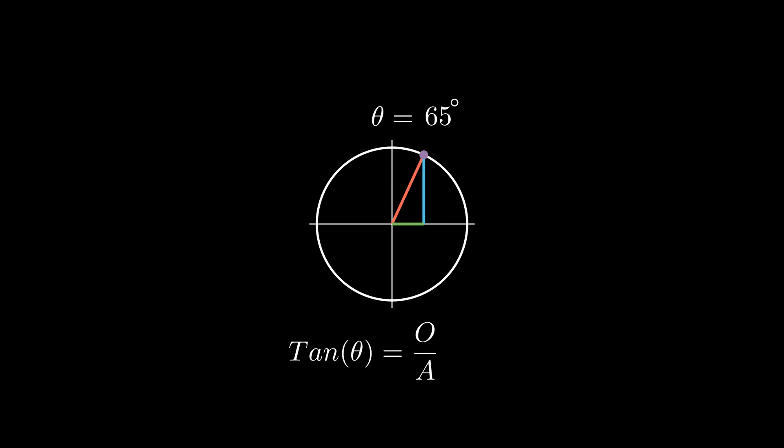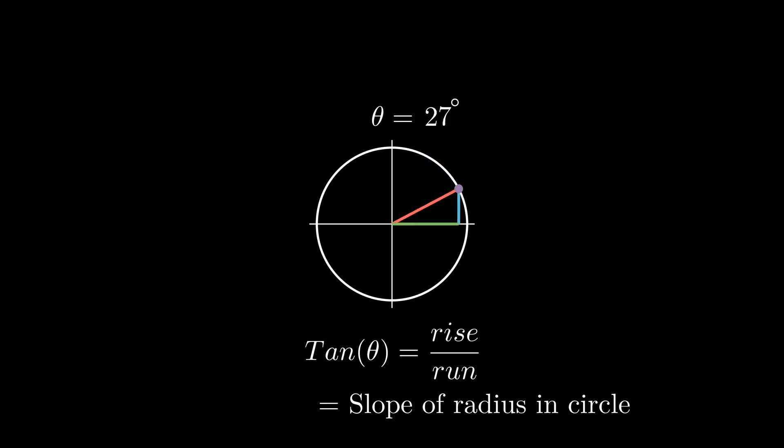Now tan, the mnemonic with TOA, or opposite divided by adjacent, can be expressed from our graph as y divided by x. Or in other words, tan of the angle equals rise over run. So just using our logic here, tan is equal to the slope of the radius in the circle. Here, let's try a couple.